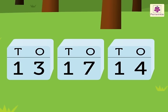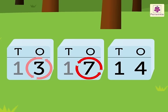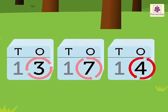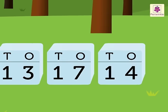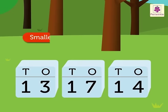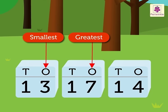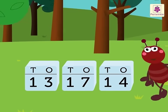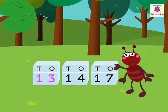Here, there are 3 ones in 13, 7 ones in 17, and 4 ones in 14. So, which is the smallest and the greatest here? The smallest is 3 ones in 13, and the greatest is 7 ones in 17. Hence, the ascending order is 13, 14, 17.